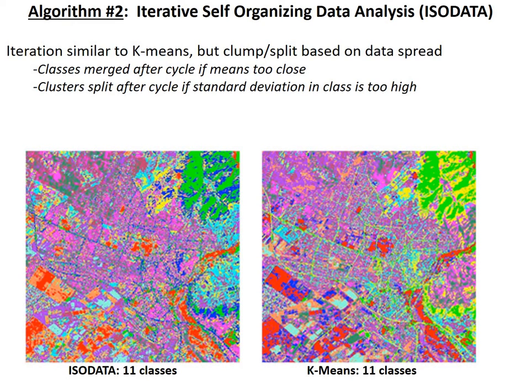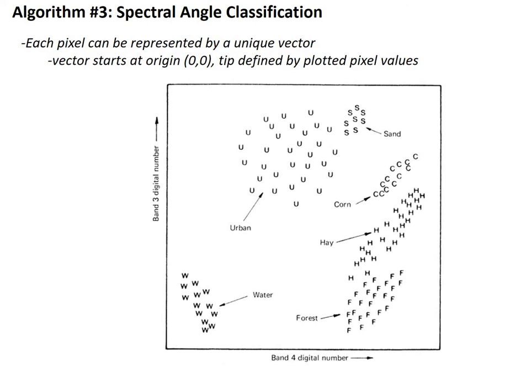Another common algorithm is ISO data, which is essentially identical to k-means except for one thing: after each cycle, the computer or user can split or merge classes. If a class has too high a standard deviation it can be split into two additional classes. Likewise, if a class ends up with only one pixel — an outlying pixel — that class can be eliminated or merged with a neighboring class, so you don't end up with a class for every outlying pixel. ISO data is what we would more commonly use than k-means because it's a bit more flexible.